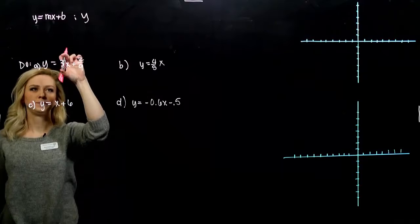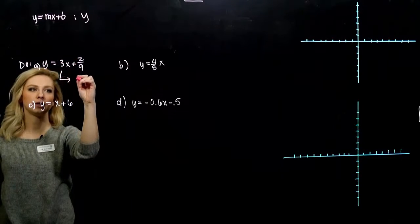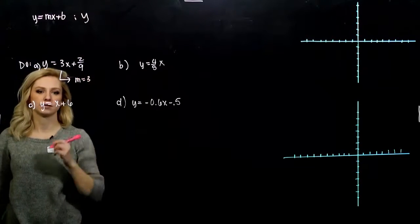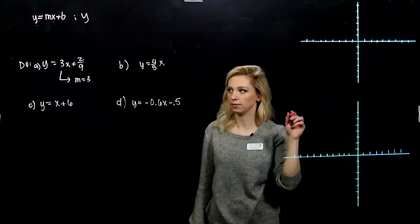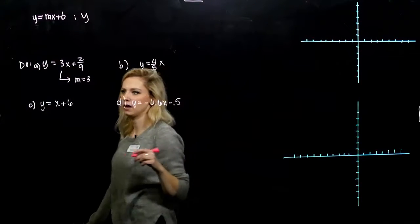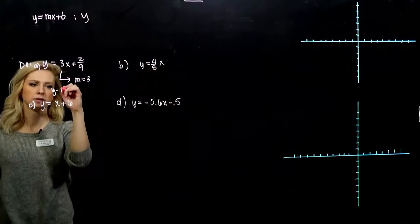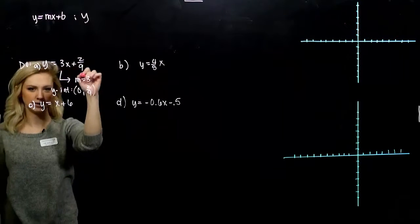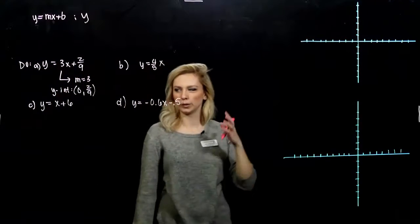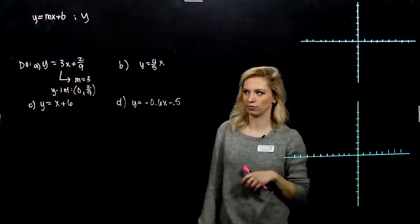I've got y on its own. Slope is the coefficient on the front of x. So that line is going to be increasing at a rate of 3 from left to right. And while we're at it, what is the y-intercept? Just to get some practice. 0, 2 ninths. Whatever constant is on the back, when I plug in 0 for x, I get that out for y.